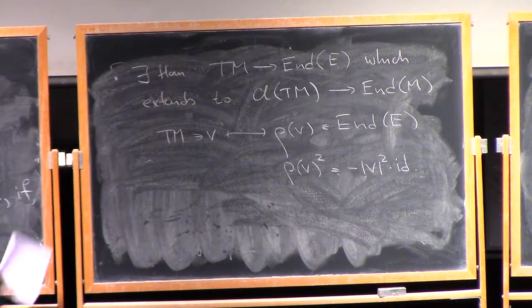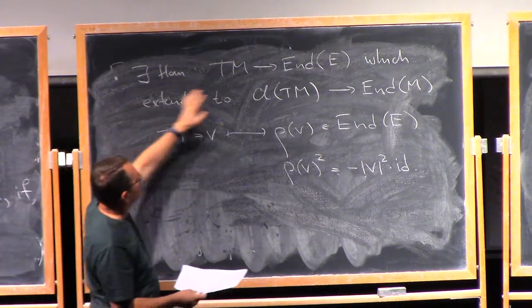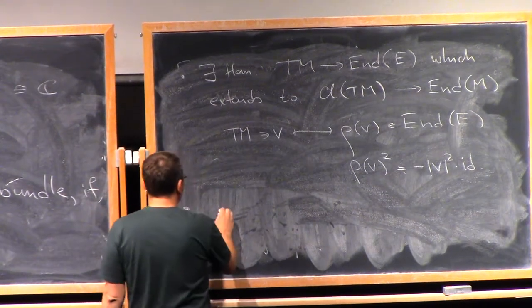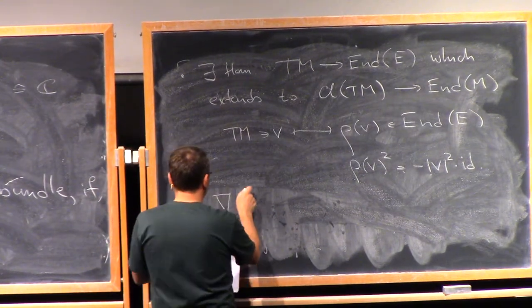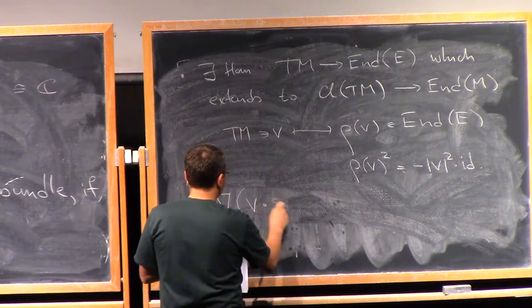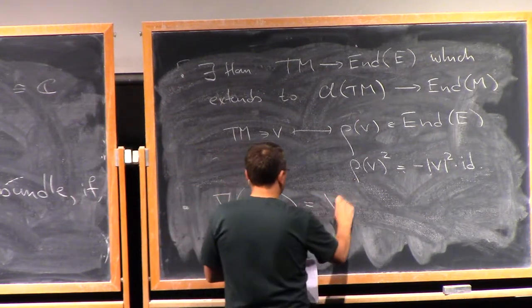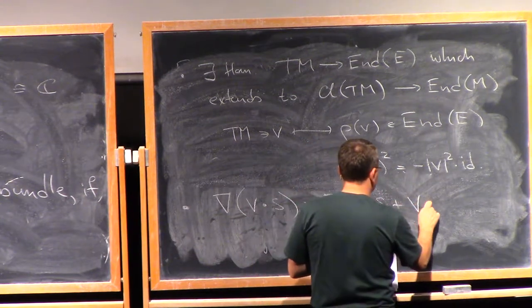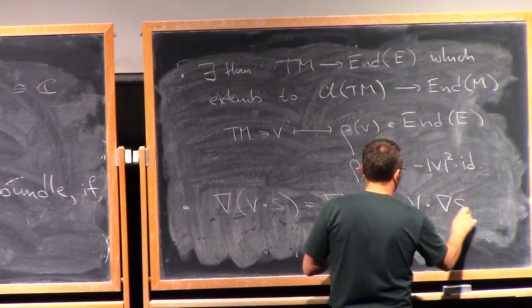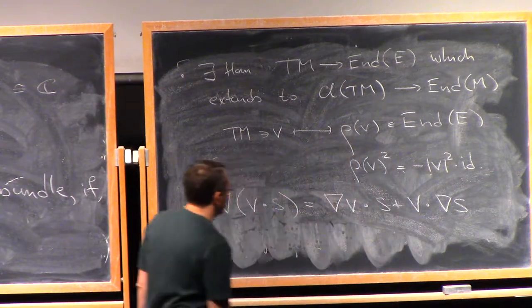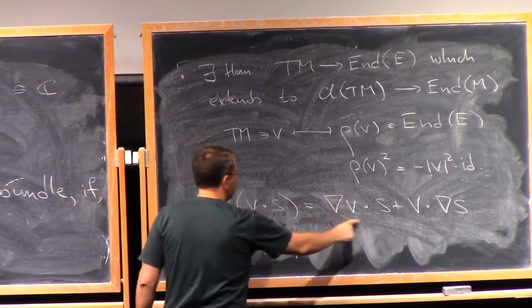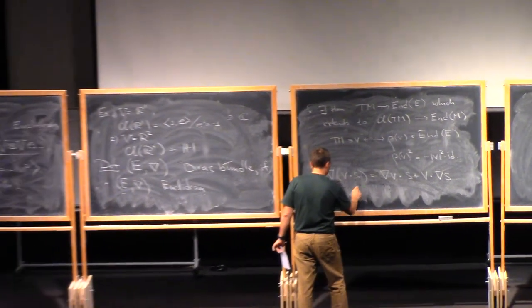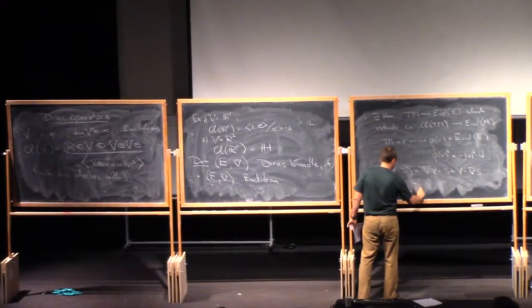And the third condition is that this structure of the Clifford module is preserved by the connections that we have. So that is NABLA of V dot S is NABLA V times S plus V times NABLA S. Right, so what I mean by this, so here V is a local vector field. So this is a section of TM.